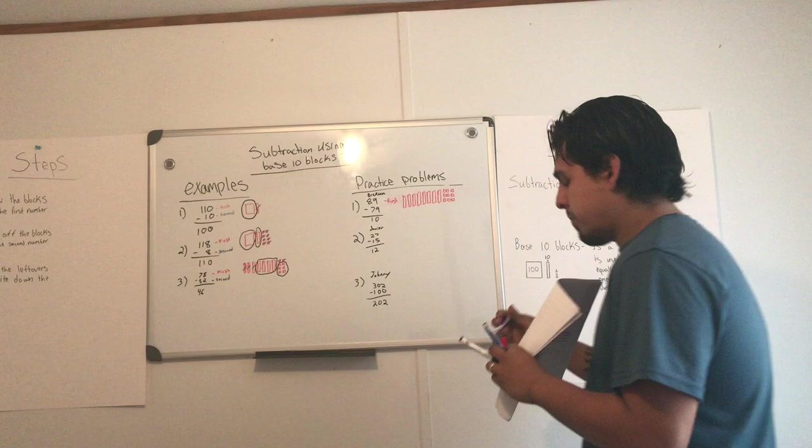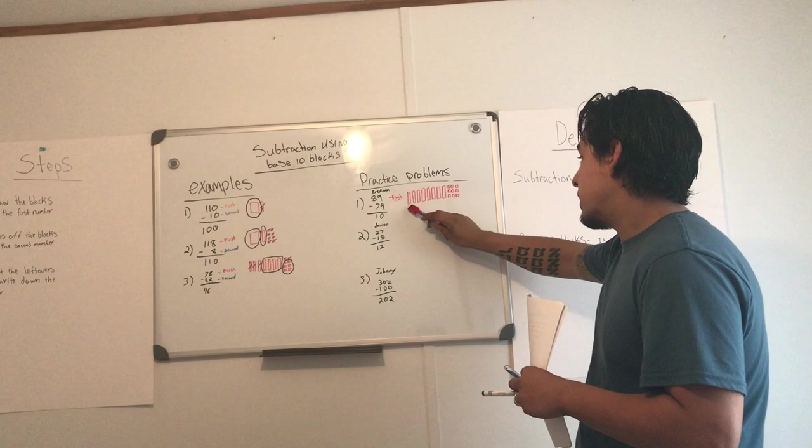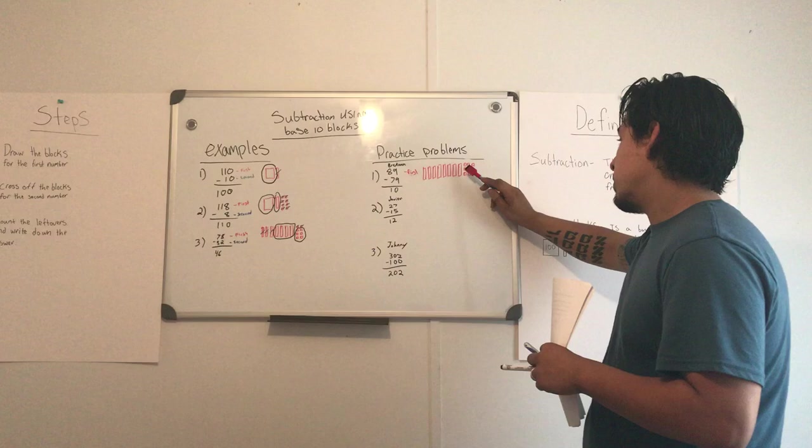Okay, so she knows that there are eight bars in 80, so that's 10, 20, 30, 40, 50, 60, 70, 80. And nine units, that's 1, 2, 3, 4, 5, 6, 7, 8, 9.